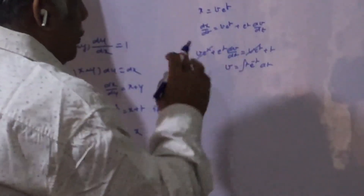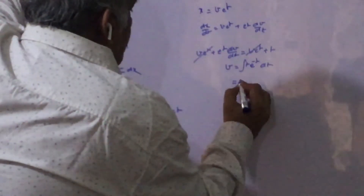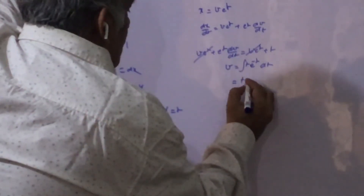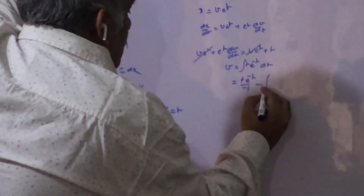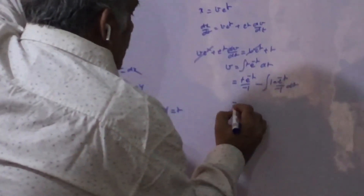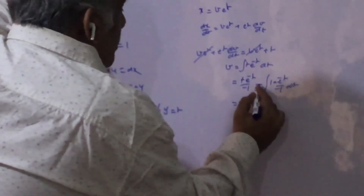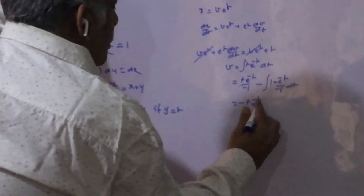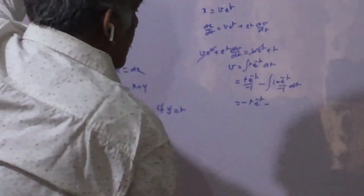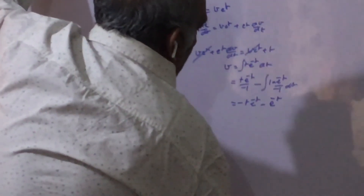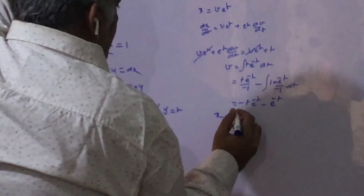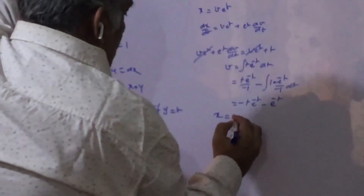We use integration by parts because the differential of t is 1, so we can eliminate t straightway. This becomes t · e^(−t)/(−1) minus the integral of 1 · e^(−t)/(−1) dt, which gives −t·e^(−t) + e^(−t)·(−1)/(−1), i.e., −t·e^(−t) + e^(−t). Multiplying by e^t, this simplifies to −t − 1.